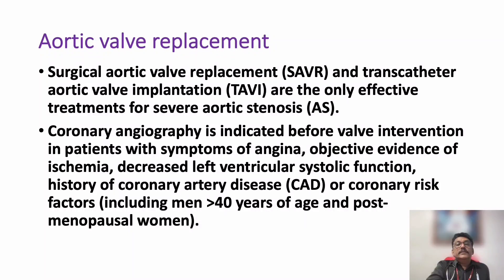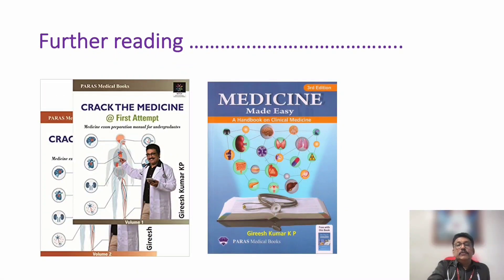Surgical aortic valve replacement or transcatheter aortic valve implantation (TAVI) are the only effective treatments for severe aortic stenosis. Coronary angiography is indicated in most symptomatic patients, especially those with angina or evidence of ischemia. Most aortic stenosis is associated with mitral regurgitation or mitral stenosis in rheumatic heart disease, while bicuspid aortic valve or Marfan syndrome can cause isolated aortic stenosis.